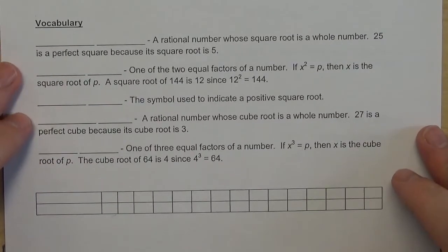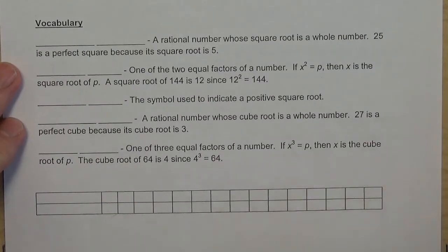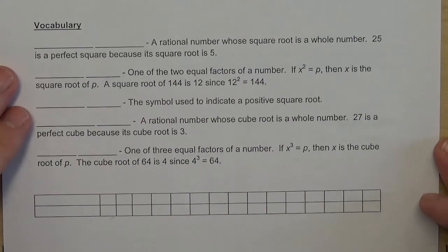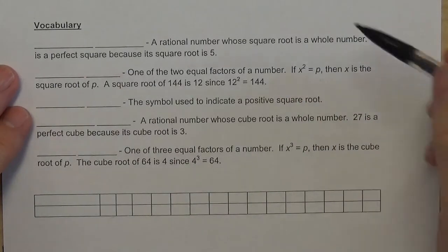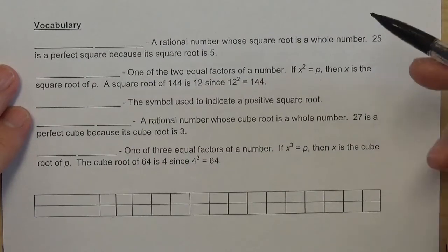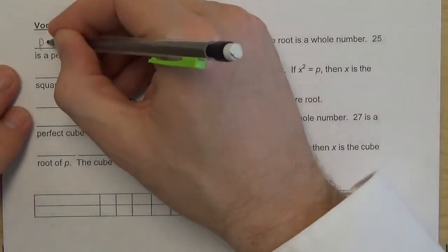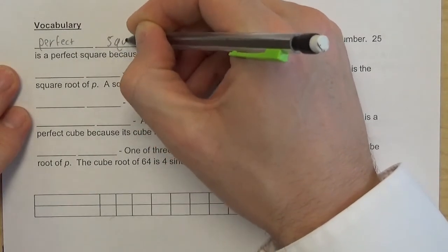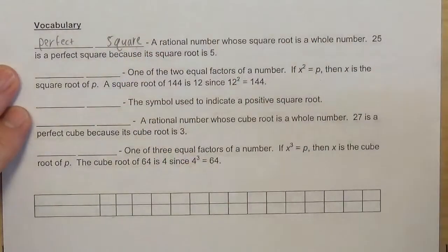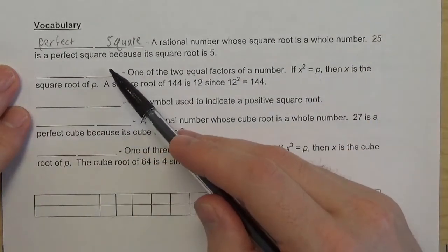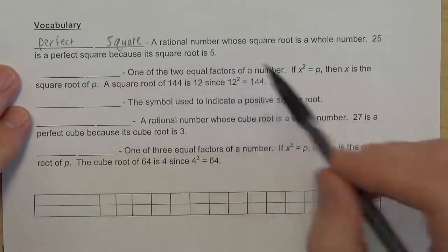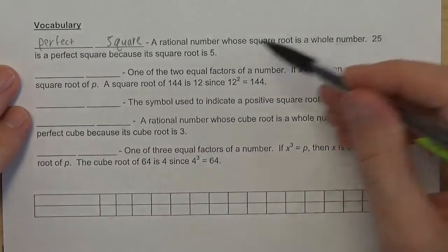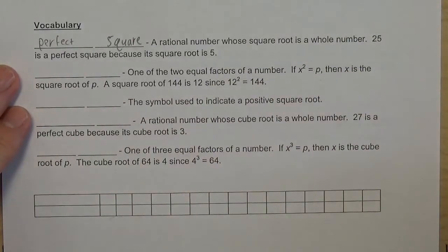Let's take a look at some vocabulary. We've got five vocabulary terms to begin understanding what we're talking about for this lesson on roots. First: a rational number whose square root is a whole number — we're talking about a perfect square. For example, 25 is a perfect square because its square root is 5. When you take the square root of 25, you get a whole number, which makes 25 a perfect square.